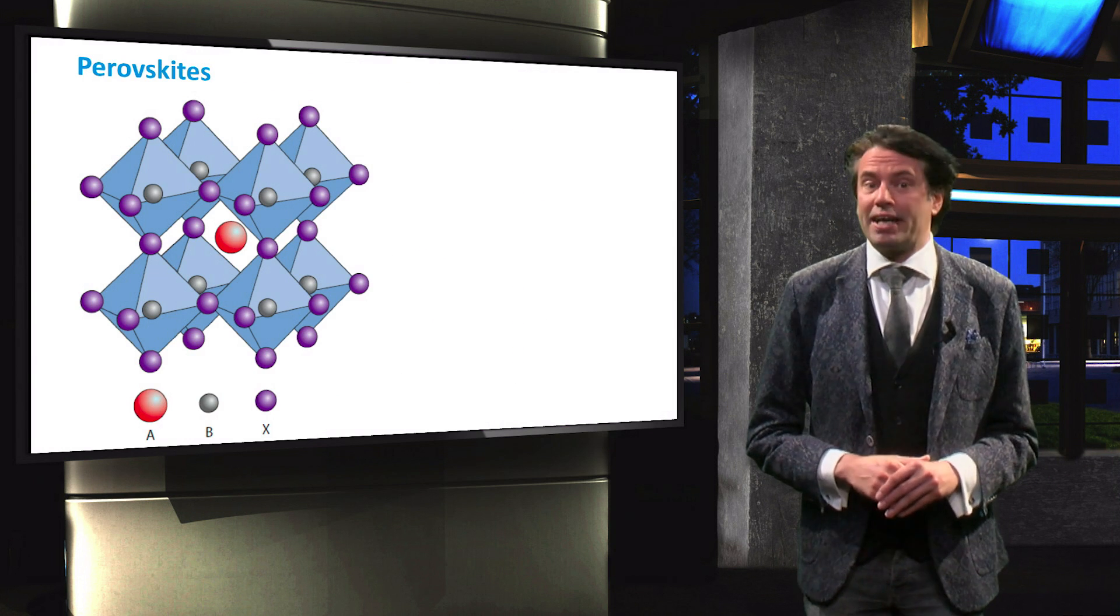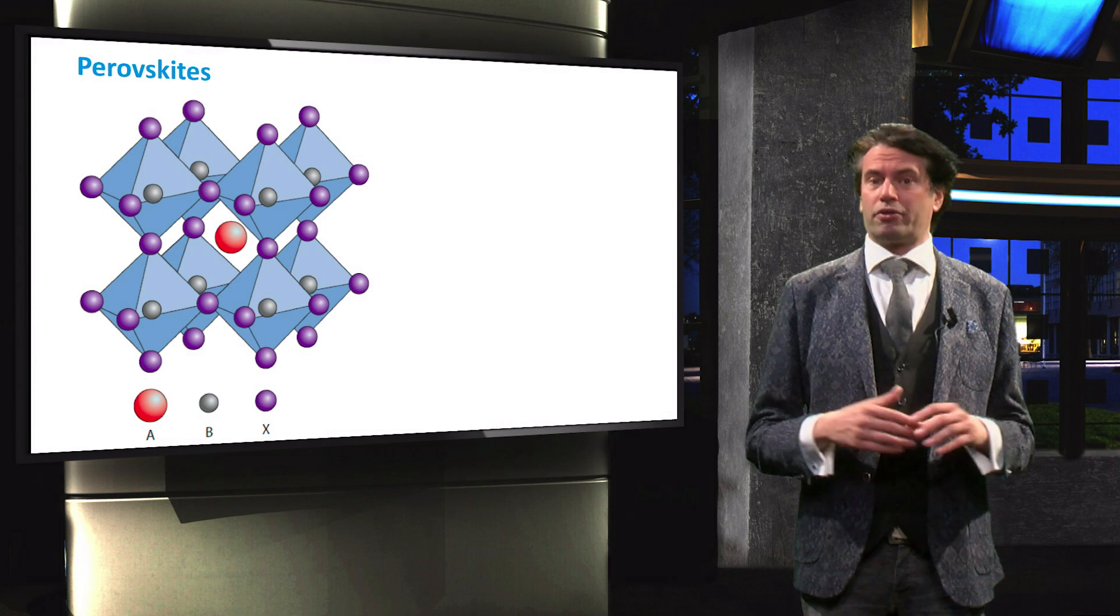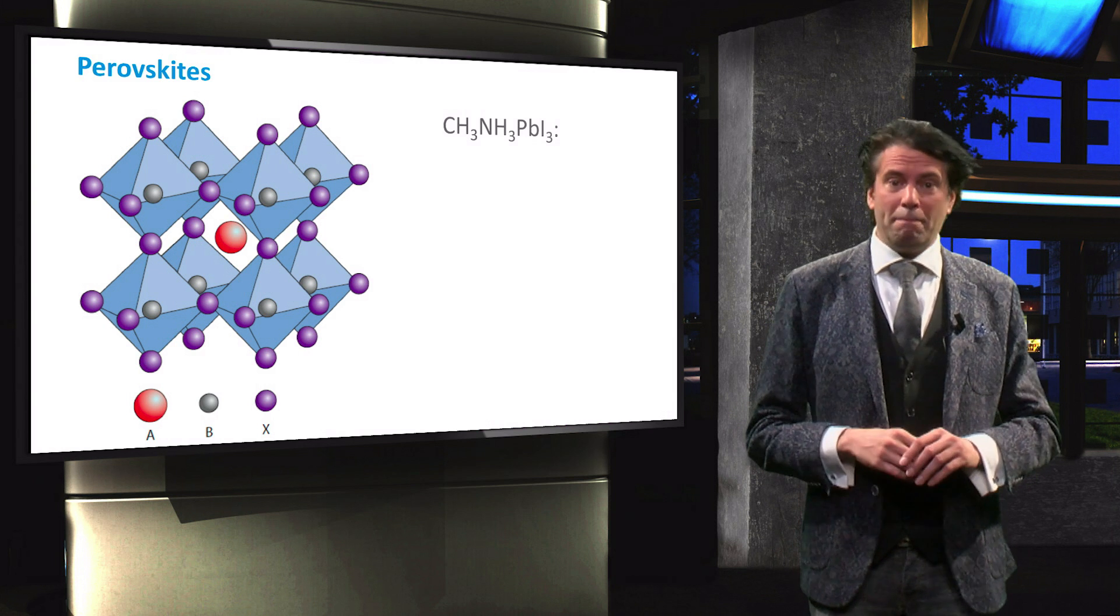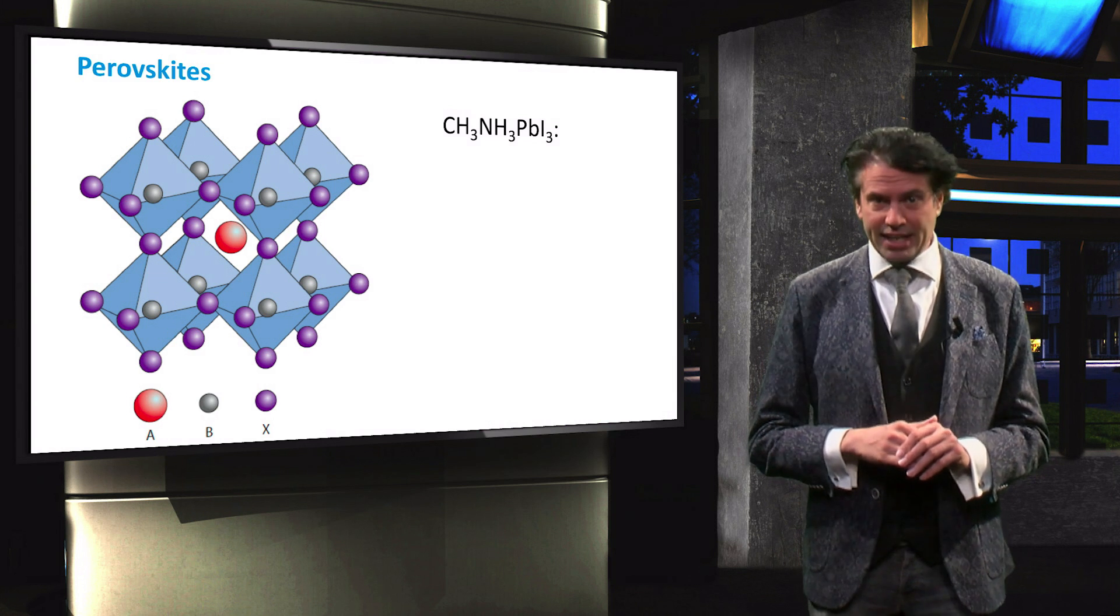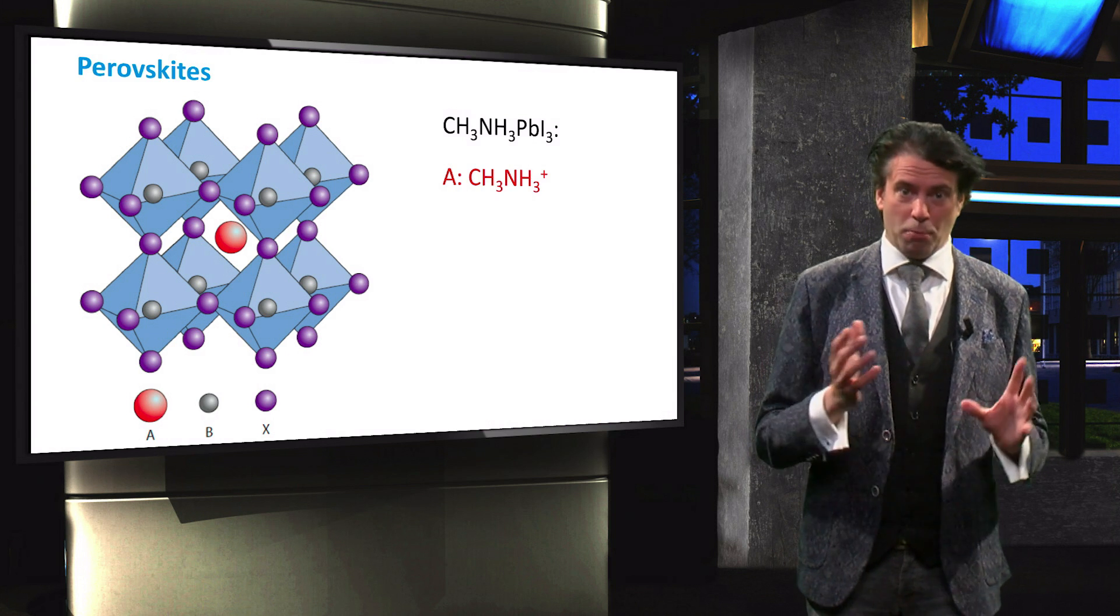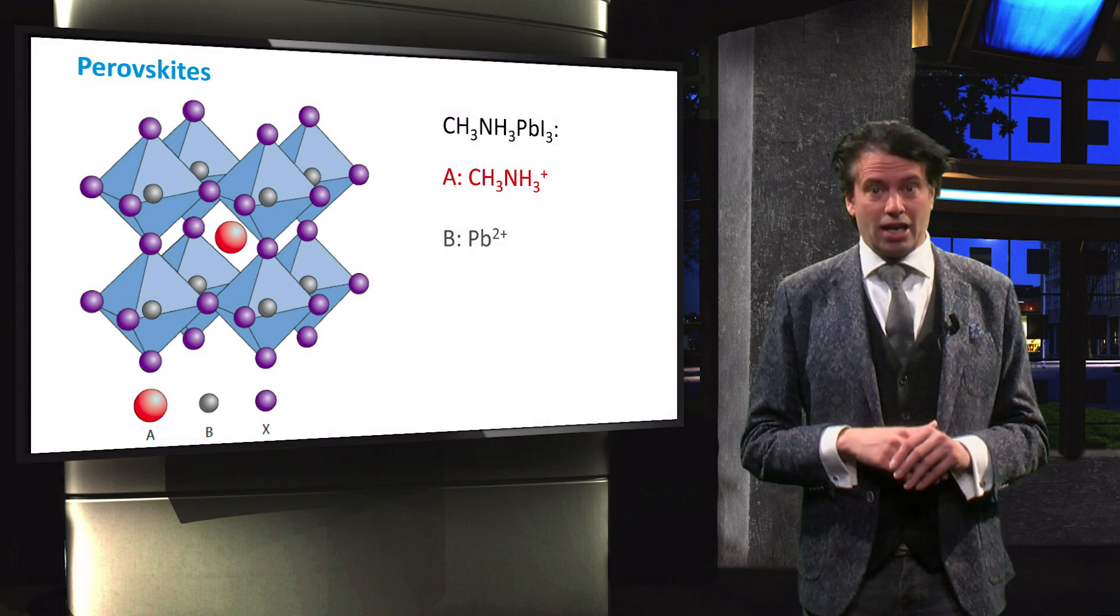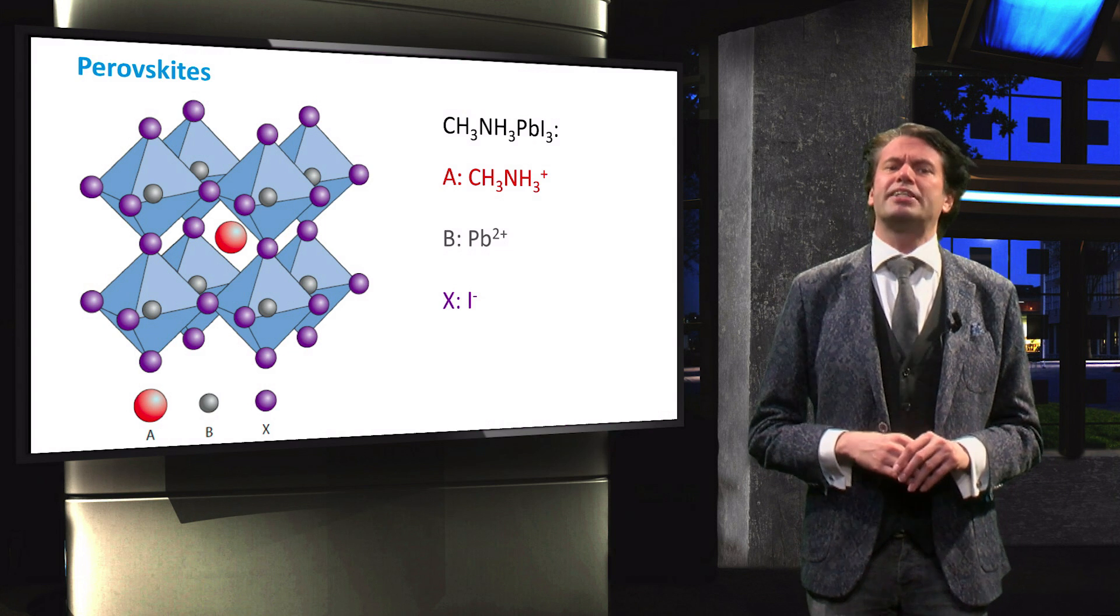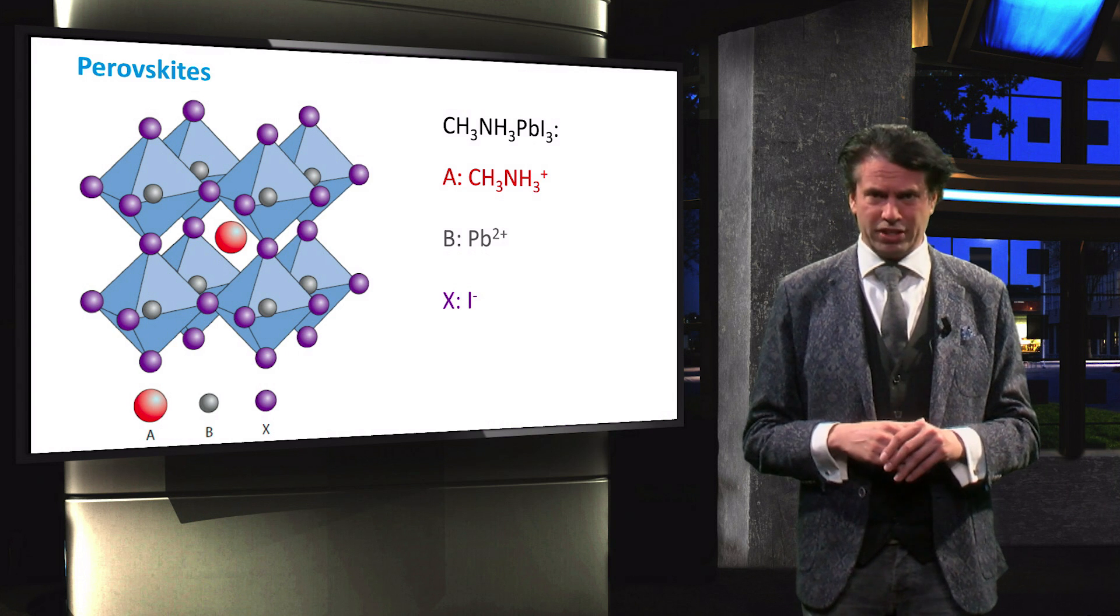Let's look at the bandgap of the perovskite solar cells. Here we see the general cubic crystal structure of a perovskite. One of the most common perovskites is the methyl ammonium lead triodide, where the cation A is the methyl ammonium ion, cation B is the lead ion and anion X is the iodide ion. This perovskite has a reported bandgap in the range of 1.5 to 1.7 eV.